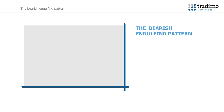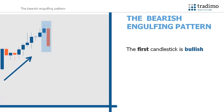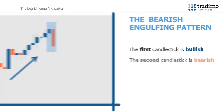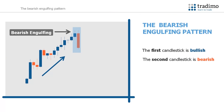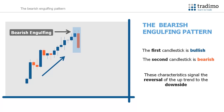Let's now have a look at the characteristics of a bearish engulfing pattern. You can see in this example the market is in an uptrend. Notice the highlighted area where the first candlestick of the pattern is bullish, shown by its blue colour. The second candlestick in the pattern is bearish, indicated by its orange colour, and engulfs the body of the preceding bullish candlestick. These characteristics signal the reversal of the uptrend to the downside and demonstrate how the bulls were overpowered by the bears.